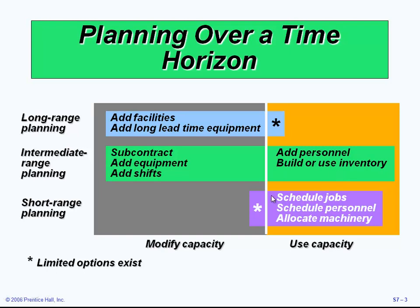For short-range planning, the planning and use occur in the use phase. In that phase you will find jobs being scheduled, personnel being scheduled, and machinery being allocated — and the capacity has been fully used.